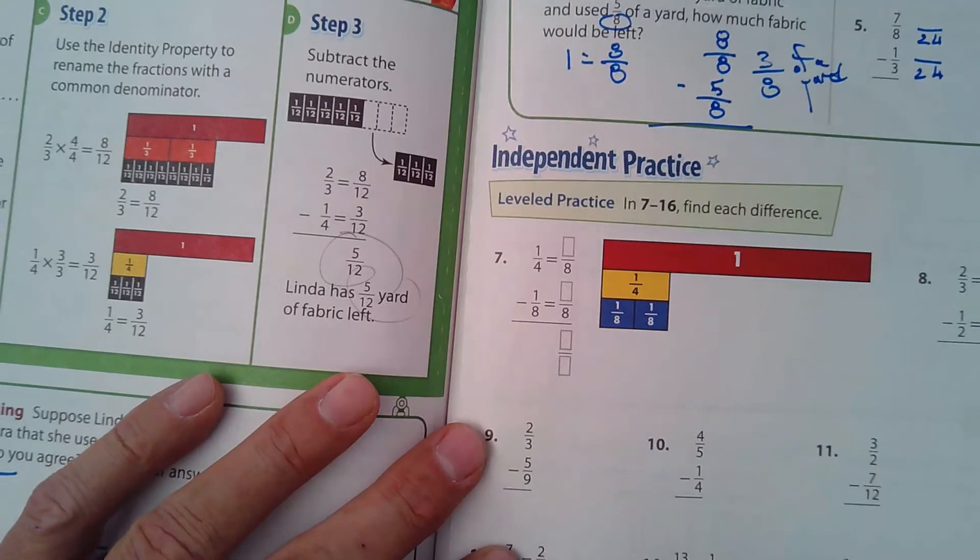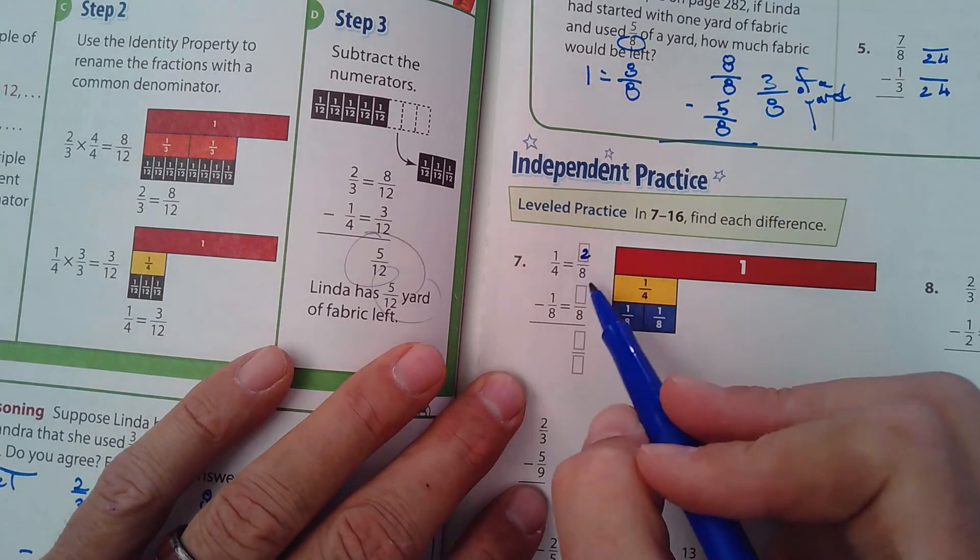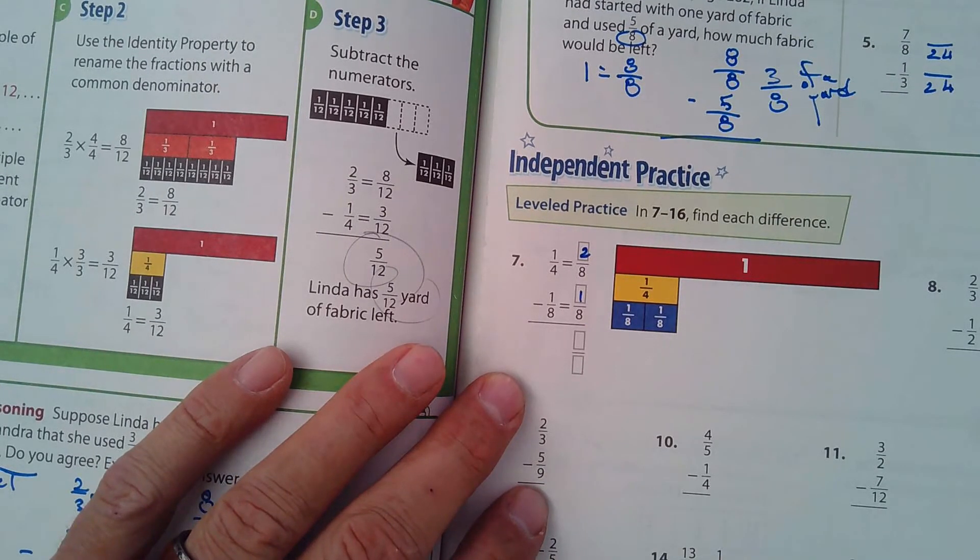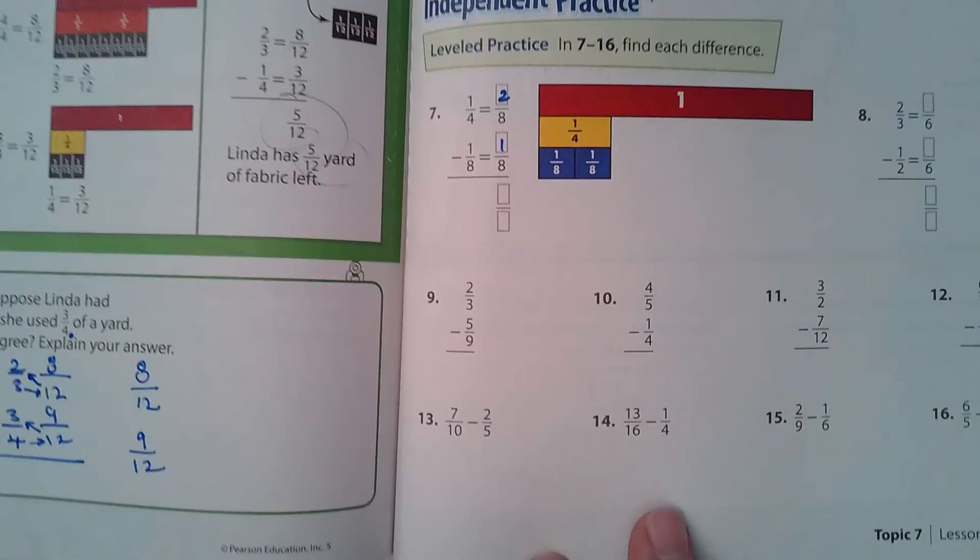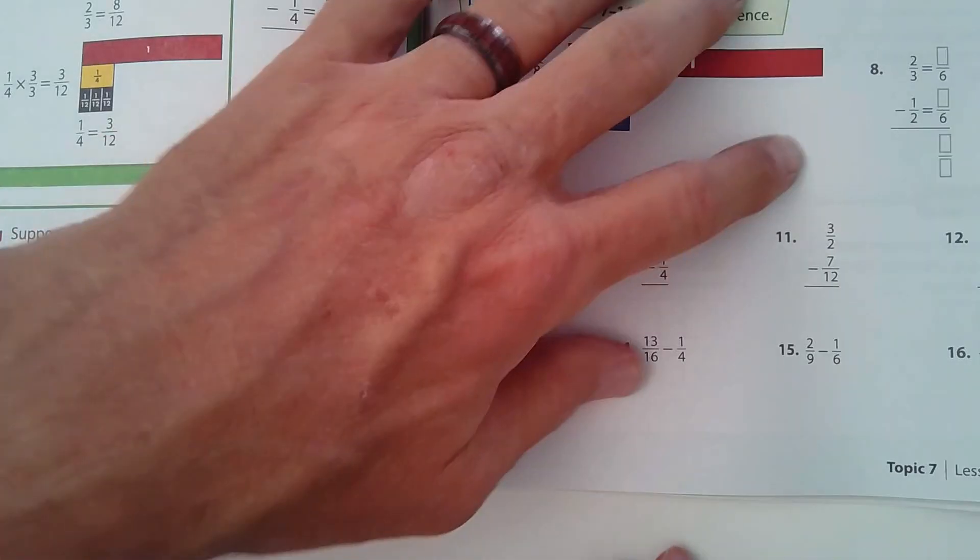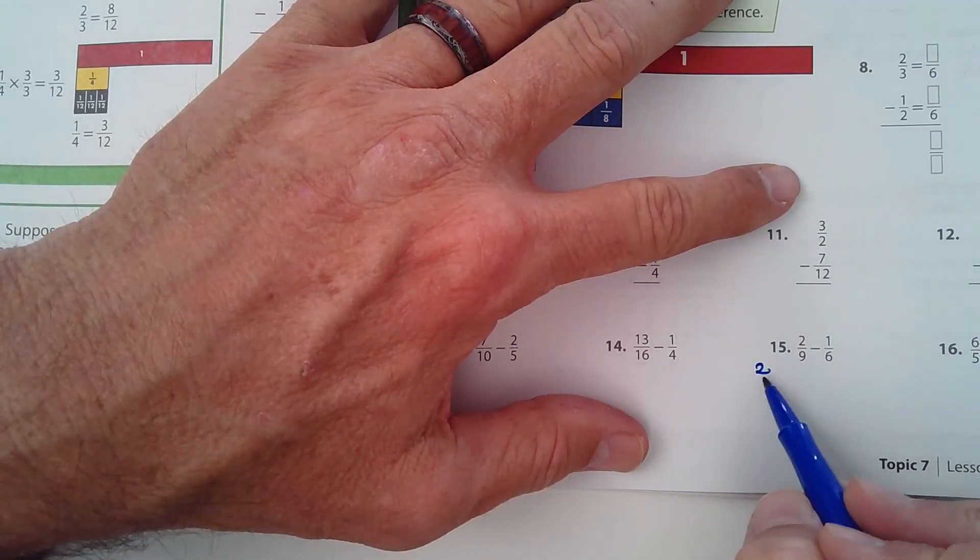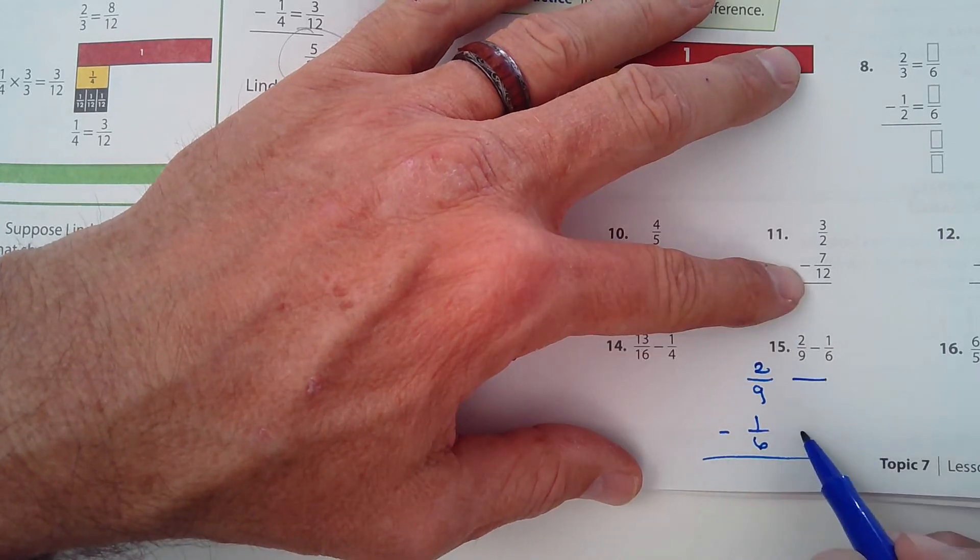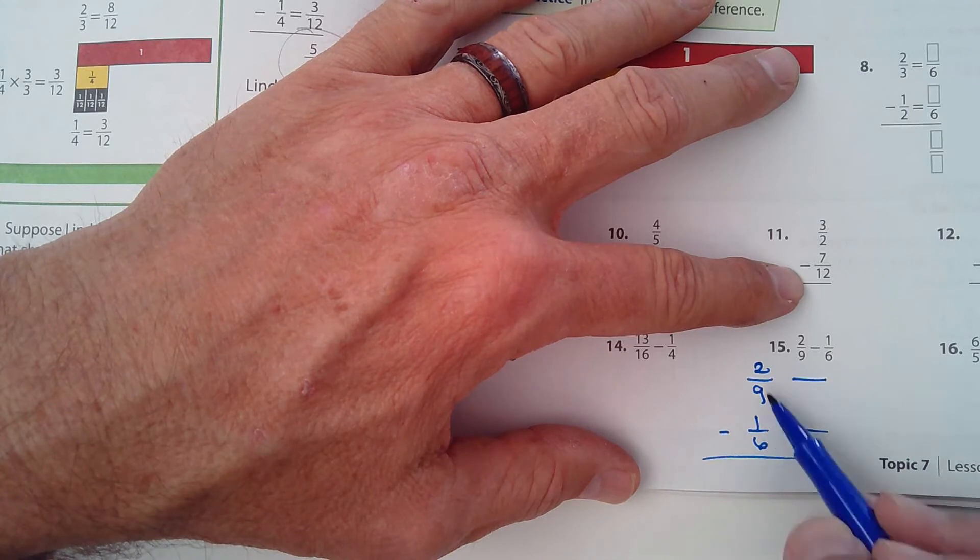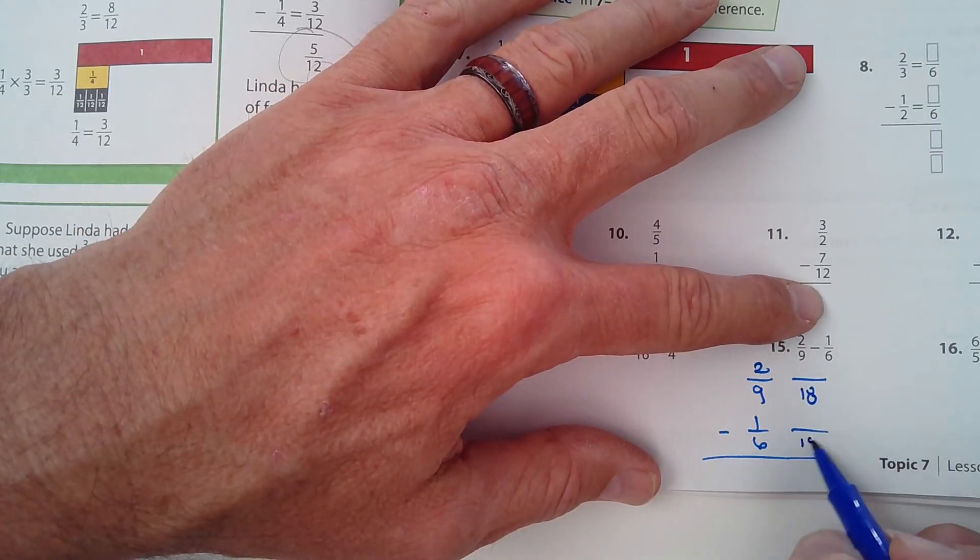Down in the leveled practice, they call it. What would go here? Two and one. Let's see here. Go down a little bit further. How about this one? Two ninths and we're subtracting one sixth. What could be the common denominator we would use?